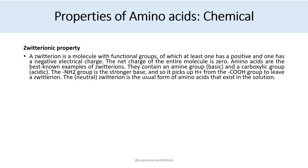They contain an amine group, which is basic, and a carboxylic group, which is acidic. The NH2 group is the stronger base, and so it picks up a hydrogen from the COOH group to leave a zwitterion. The neutral zwitterion is the usual form of amino acid that exists in solution.